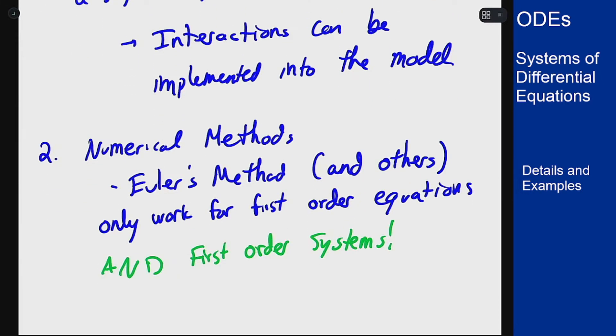And so if we can find a way to write a higher-order equation, like say a third- or fourth-order equation, as a first-order system, then we can apply Euler's method to that system and get the result that we want for the equation.